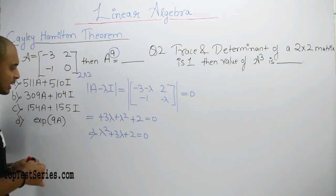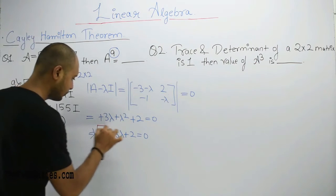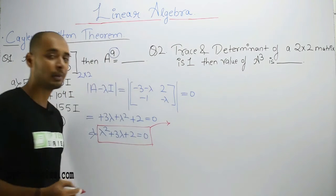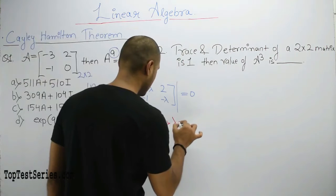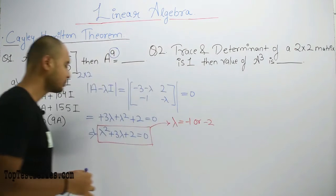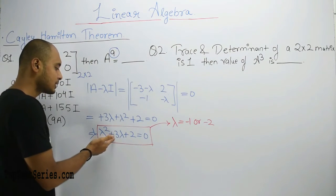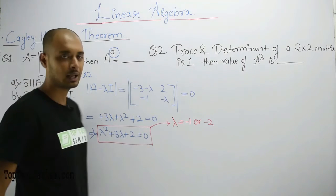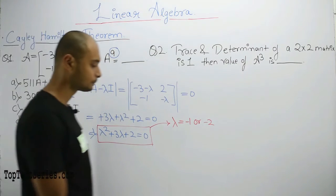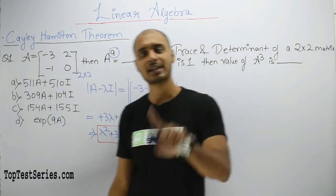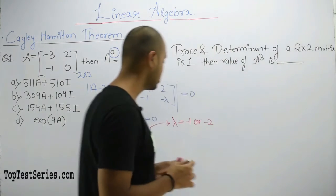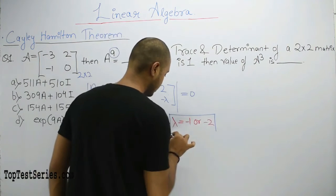We need to find the roots of this equation. Using the quadratic formula (which we have studied since class 11-12), solving gives us lambda = -1 and lambda = -2. Alternatively, we can factor: λ² + λ + 2λ + 2 = 0, giving the same roots. Now I said that every eigenvalue can be replaced by A and A can be replaced by the eigenvalue. Our eigenvalues have arrived, so now let's use them.